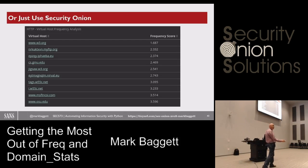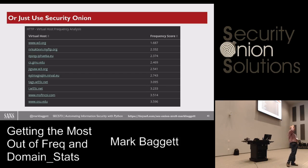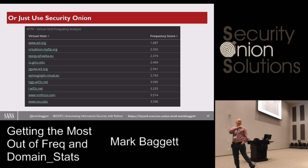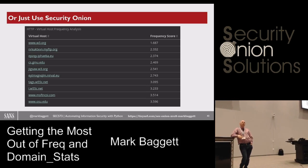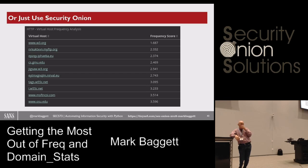Freak score is already integrated into Security Onion. If you're out there and you see virtual host frequency analysis numbers, now you know what those numbers mean and where they're coming from. We recently had a new version which does both measures. I think I pushed the GitHub update like five minutes before going to lunch with Doug, who said he had just integrated the new freak.py tool into Security Onion.